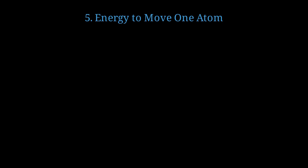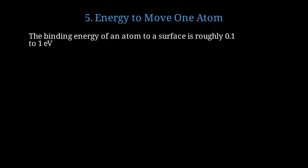Let's calculate how much energy it actually takes to push an atom around on a surface. An atom sticking to a surface has a binding energy of roughly 0.1 to 1 electron volt. 1 electron volt equals 1.6 times 10 to the negative 19 joules. So, moving one atom takes about 10 to the negative 19 joules. That's incredibly tiny!